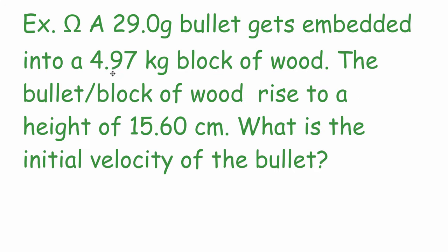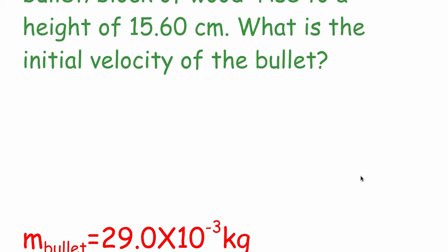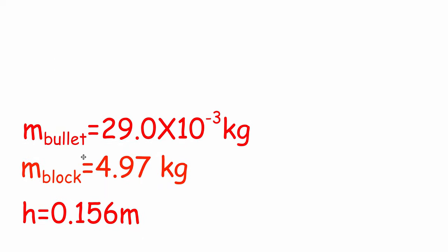Let's take a look at a mathematical example. We have a 29-gram bullet getting embedded into a 4.97-kilogram block of wood that goes to a height of 15.6 centimeters, and we want to find the initial speed of the bullet. We list our variables: mass of the bullet is 29 grams, converted to 29 × 10⁻³ kilograms; the block of wood is 4.97 kilograms; and the height is 15.6 centimeters, which in meters is 0.156 m.